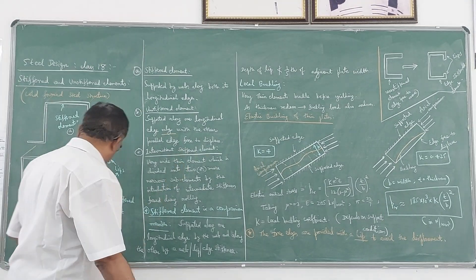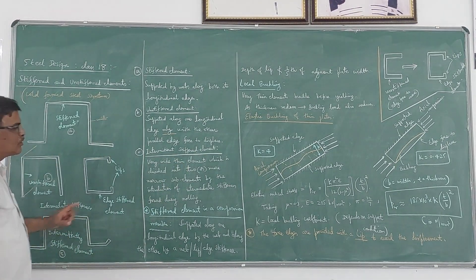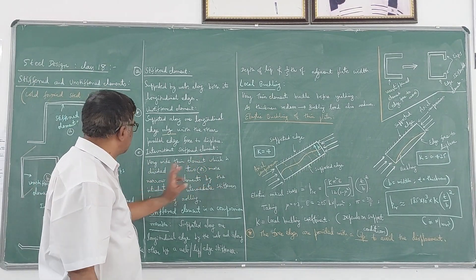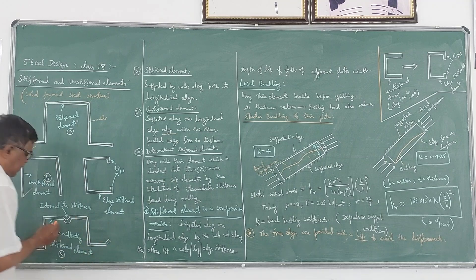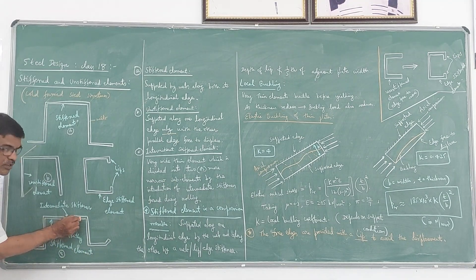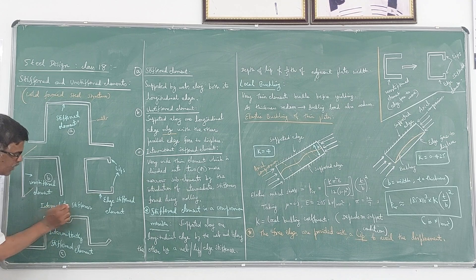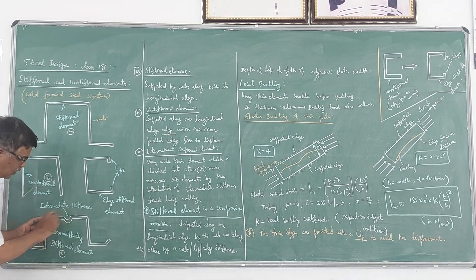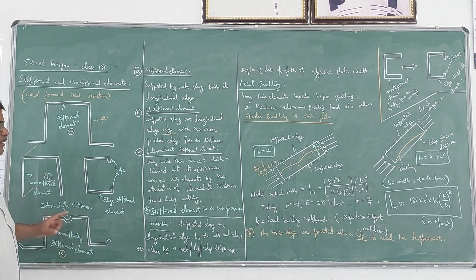The intermediate stiffened element: this is a very wide thin element which is divided into two or more narrow sub-elements. These are the sub-elements — this one sub-element, this another sub-element. These two are connected by an intermediate stiffener. Then in such a case this entire element is called an intermittently stiffened element.